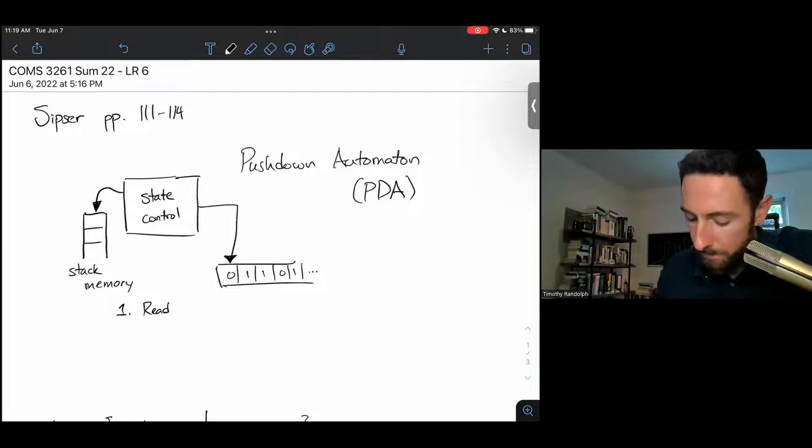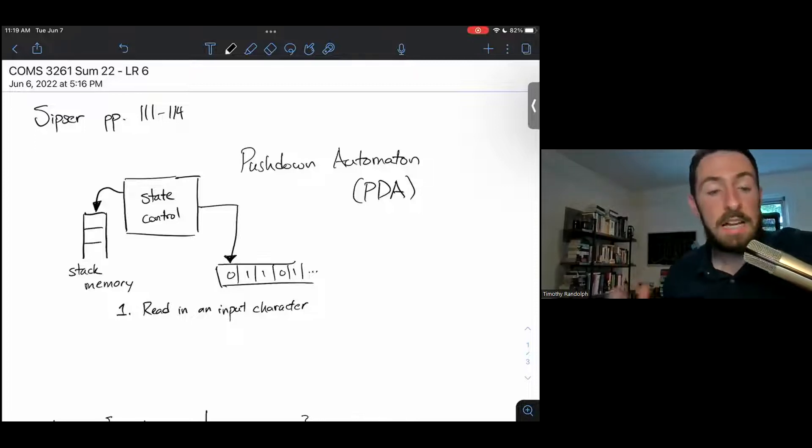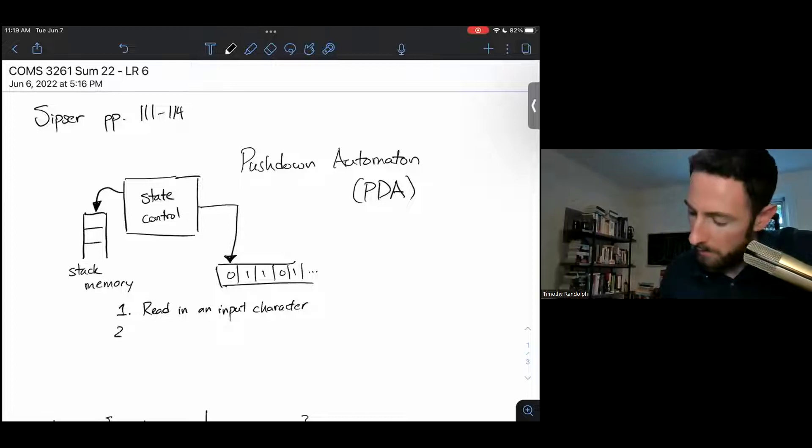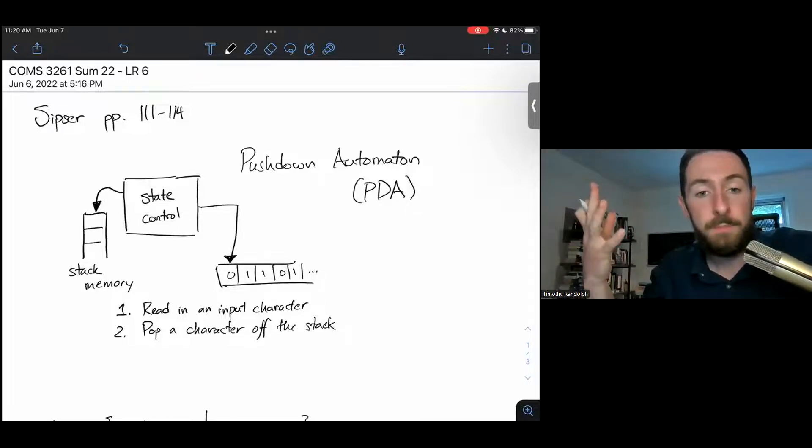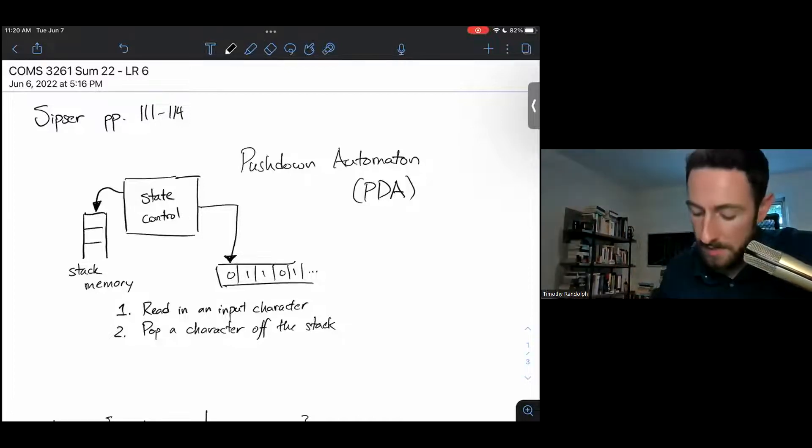So on one step of computation, a PDA computes like the following. We'll read in an input character. This is the same as a DFA or NFA. Like an NFA, we can also read in an empty string. We can take an epsilon transition. We also are allowed to pop a character off the stack. So we can pop something off and see what was on the top of our stack by popping it off. We can also pop off the empty string. That is, don't pop anything off of our stack if we want to skip that step. Third, we move to a new state. And fourth, we push some character onto the stack.